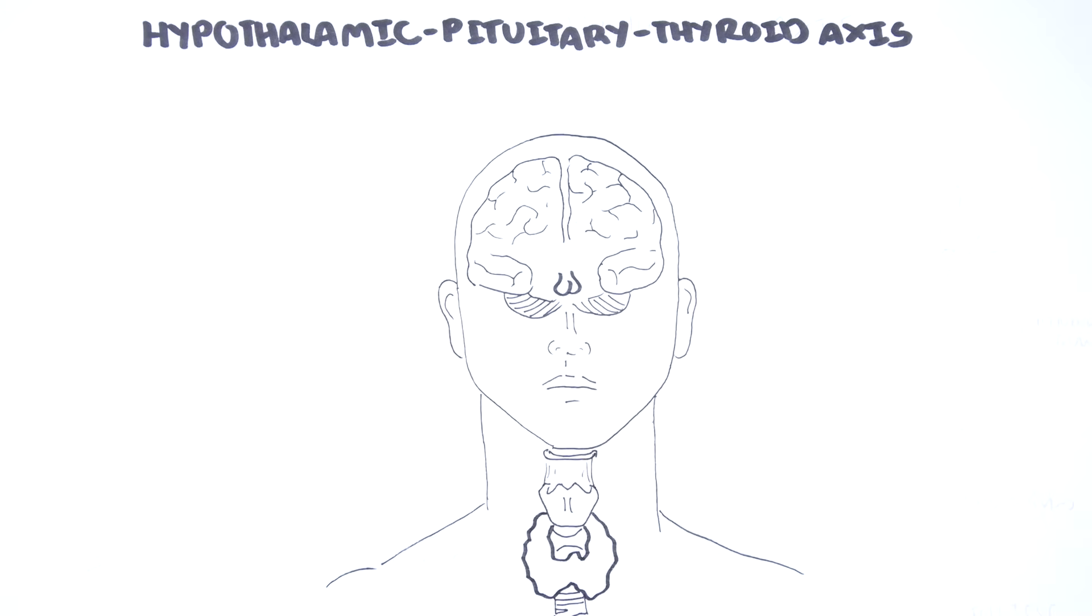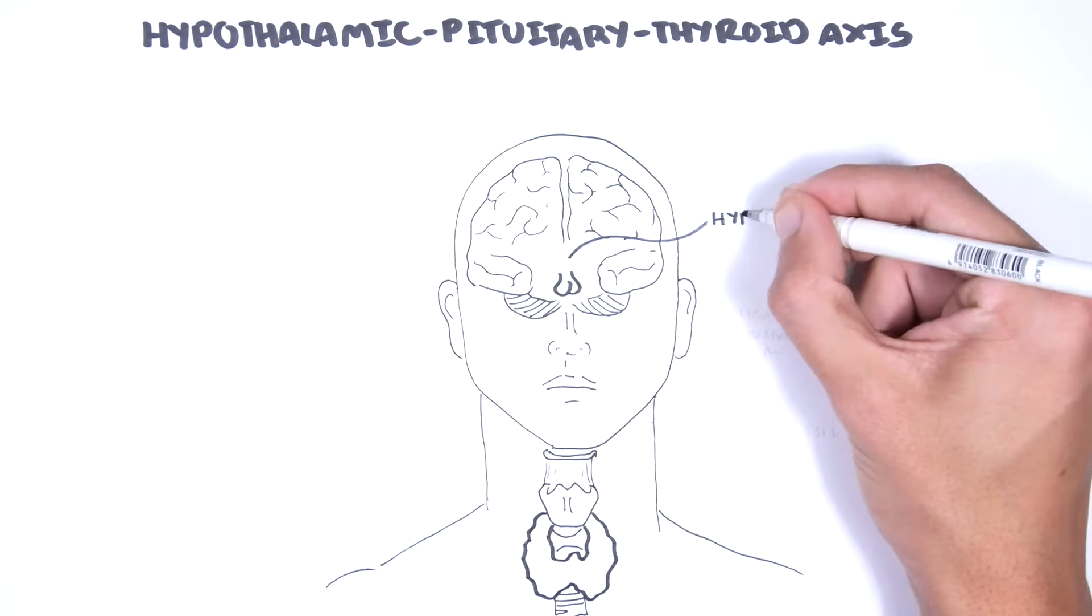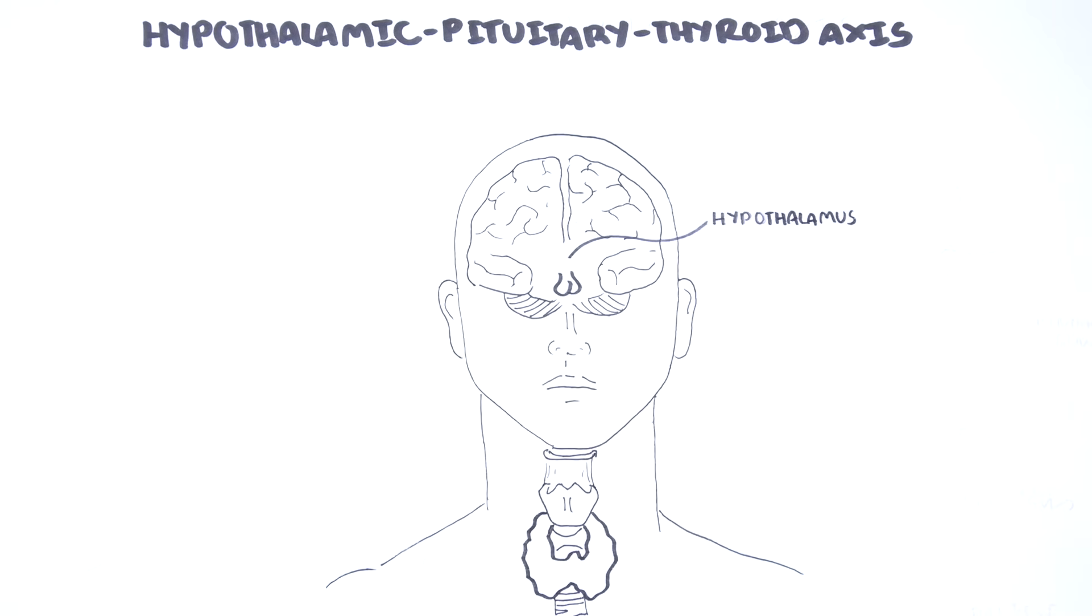Important structures are the hypothalamus, the pituitary glands, specifically the anterior pituitary gland, and the thyroid gland. The thyroid gland is located at the base of the neck and wraps around the trachea, just below the cricoid cartilage.